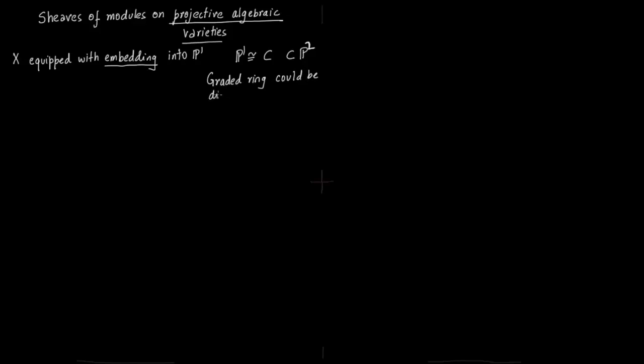And this graded ring is what plays a fundamental role. So you have to take into account the embedding into the space. Two curves could be isomorphic, but depending upon what equation they have, their graded ring would be different and that would define a different sheaf.